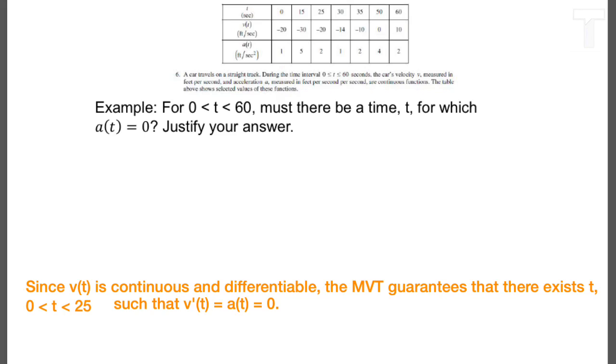this is the write-up we do. Since v of t is continuous and differentiable, the mean value theorem guarantees that there exists t. Notice I've used the same variable that they used. 0 is less than t, which is less than 25, such that v prime of t equals 0. I include this a of t because I want to match what they asked me to prove.